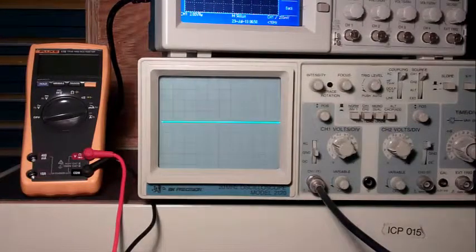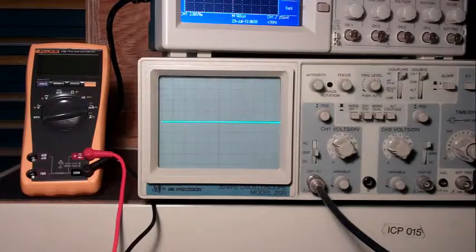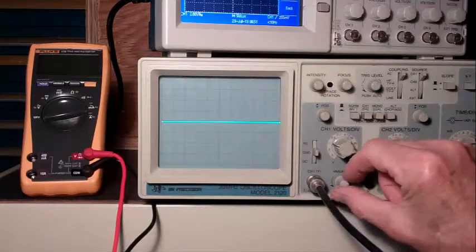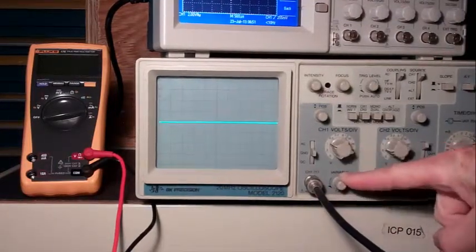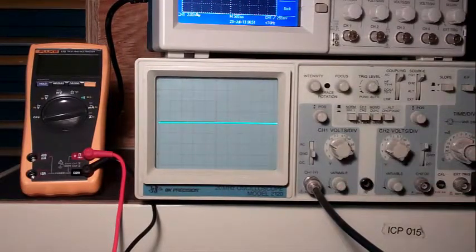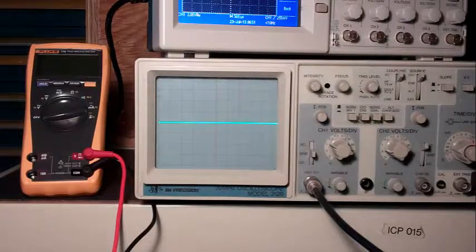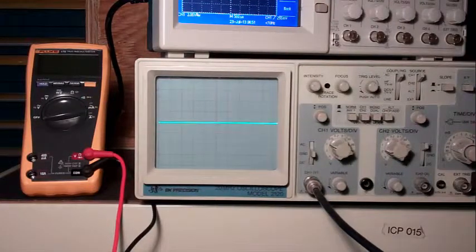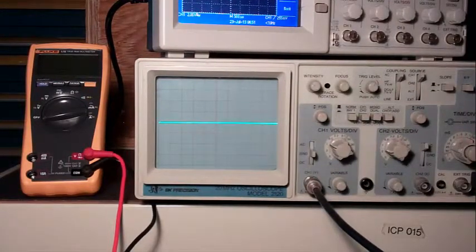First, adjust the analog oscilloscope zero position. The variable knob on the voltage is fully counterclockwise. The variable knob on the time knob is fully clockwise.